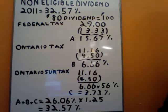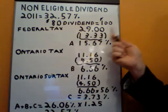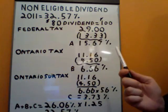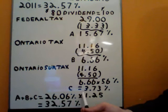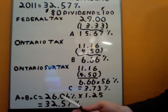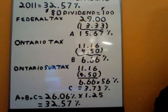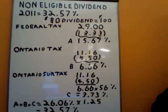We have to gross this number up by 1.25%. Our $80 dividend was grossed up to $100 — you actually only received $80, but you're being taxed as if it were $100. So we have to gross up our tax rate as well. 26.06% times 1.25 gives us 32.57%, which is equal to the number we had at the top. That is how we arrive at our top marginal tax rate for non-eligible dividends here in Canada.